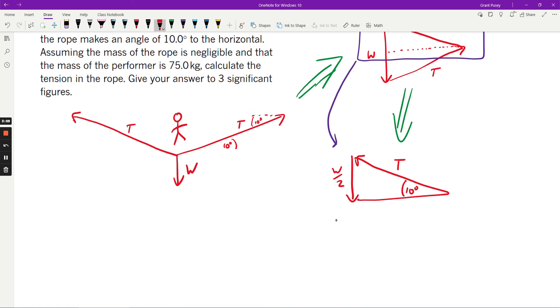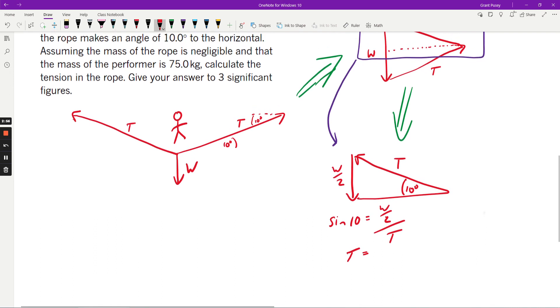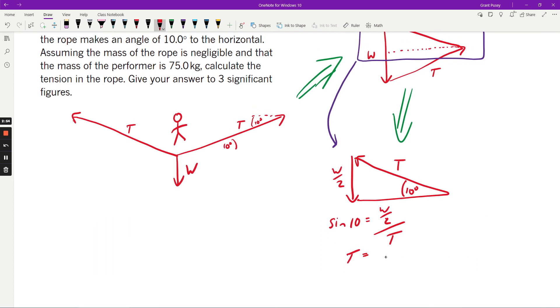So from here, I know that in this particular case, sine of 10 is going to be equal to the opposite over the hypotenuse. So that would mean that the tension force, for both tension forces, is going to be equal to W over 2 sine 10.